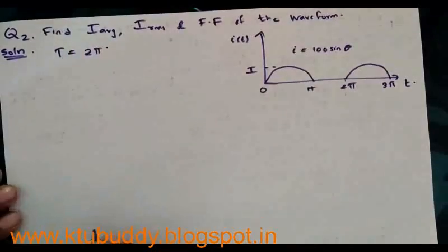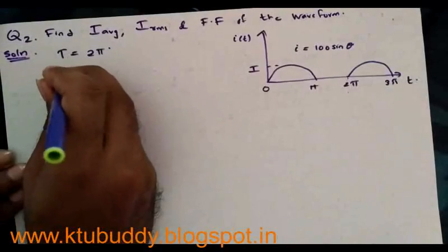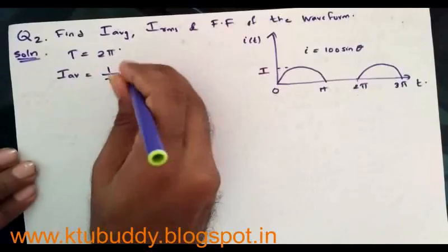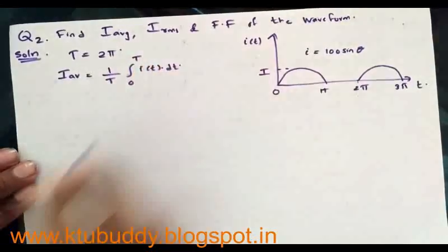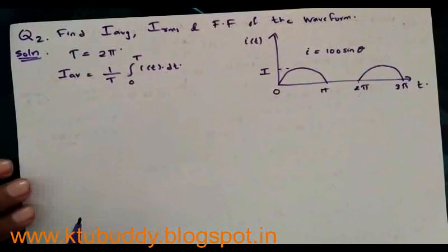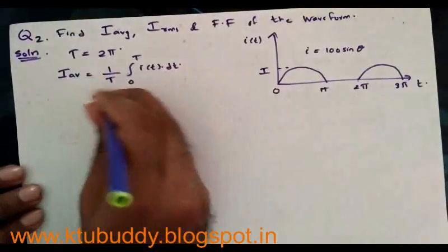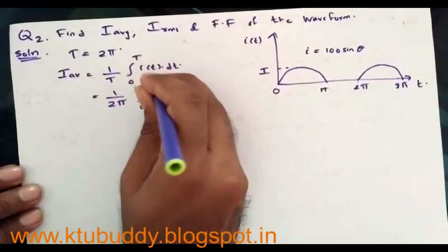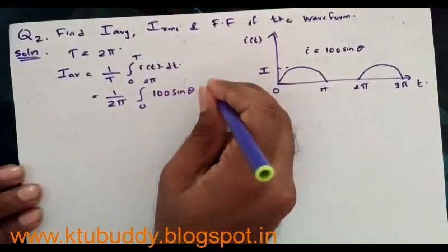Next, we have to determine i_average, the average value of current. The equation is: i_average = (1/T) × integral from 0 to T of i(t) dt. We have to determine the area of this current waveform using integration, which is given by (1/2π) × integral from 0 to 2π of i(t) dt. The value of i(t) is given as 100 sin(θ), so we integrate 100 sin(θ) dθ.